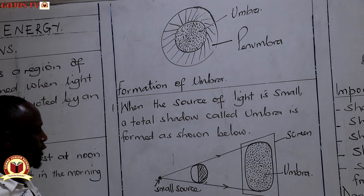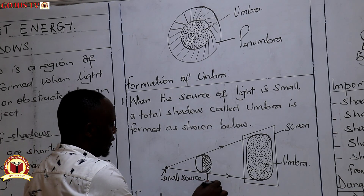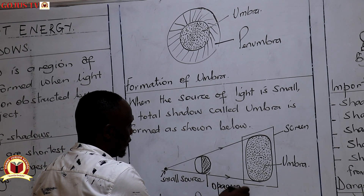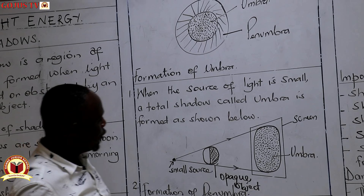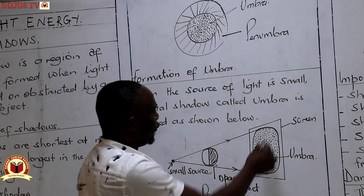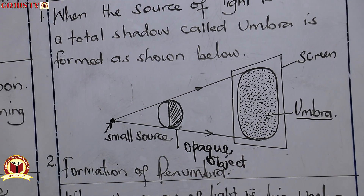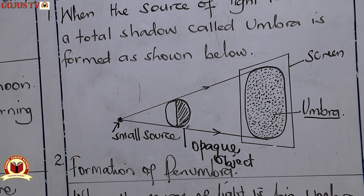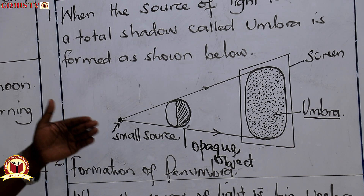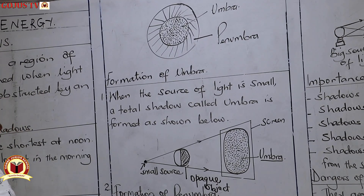In the diagram, we have the opaque object in the middle. Because opaque objects block light and form shadows, what is formed on the screen is the umbra — the darker region, also called the total shadow. So umbra is formed when the source of light, or the point source of light, is small.